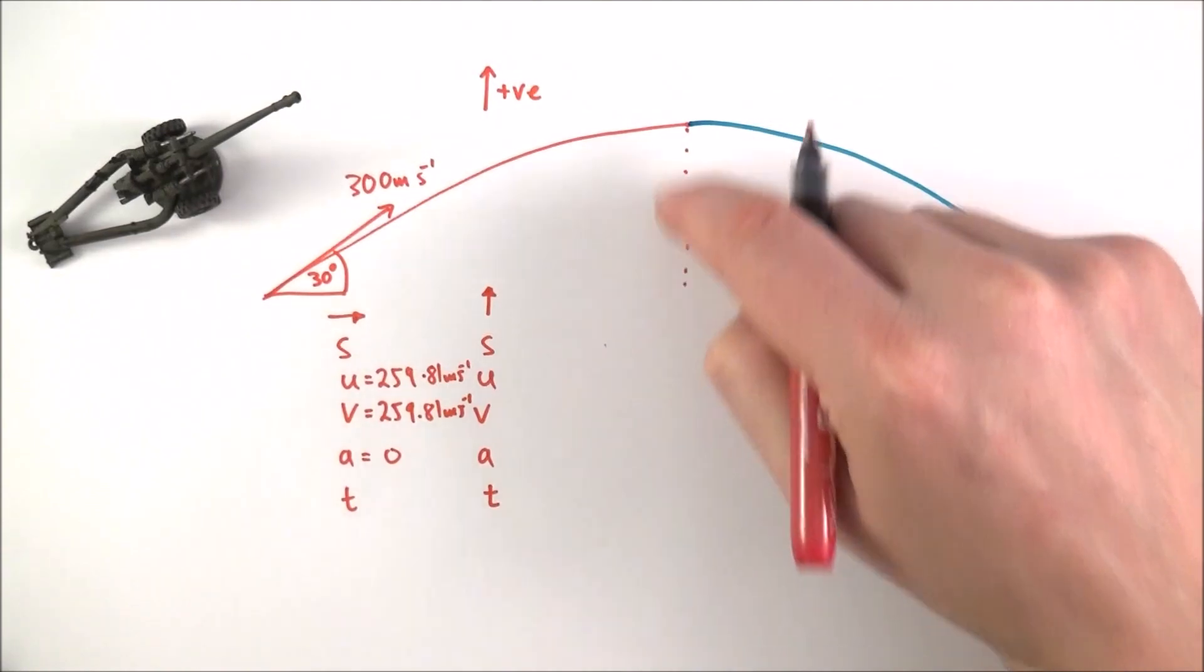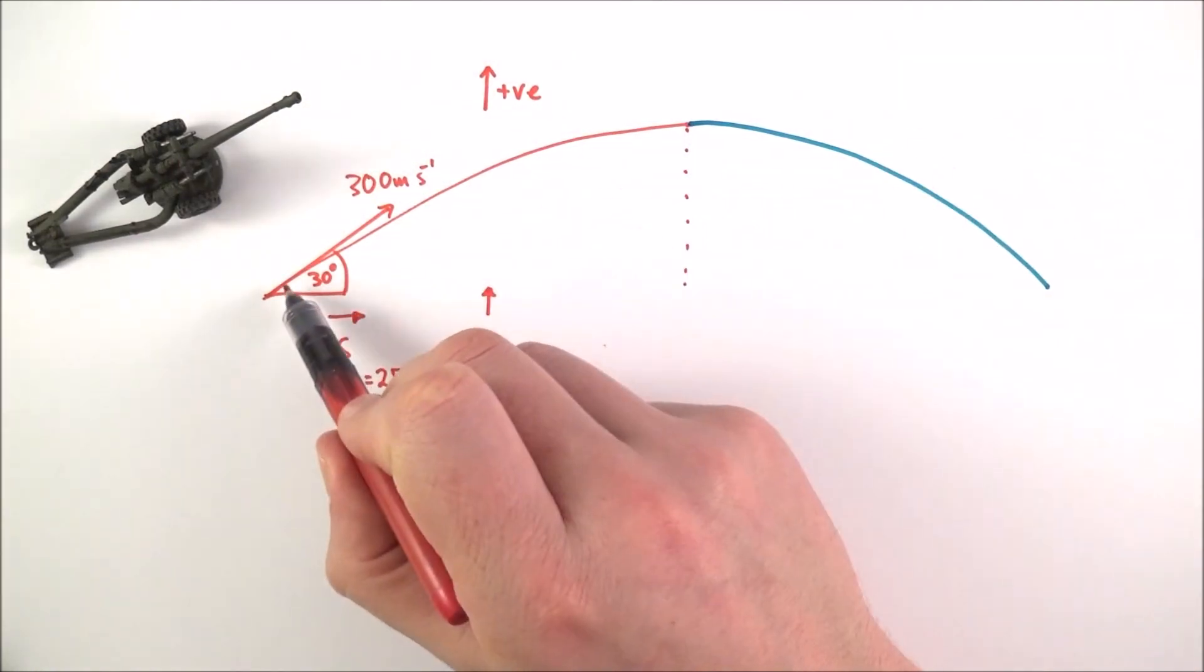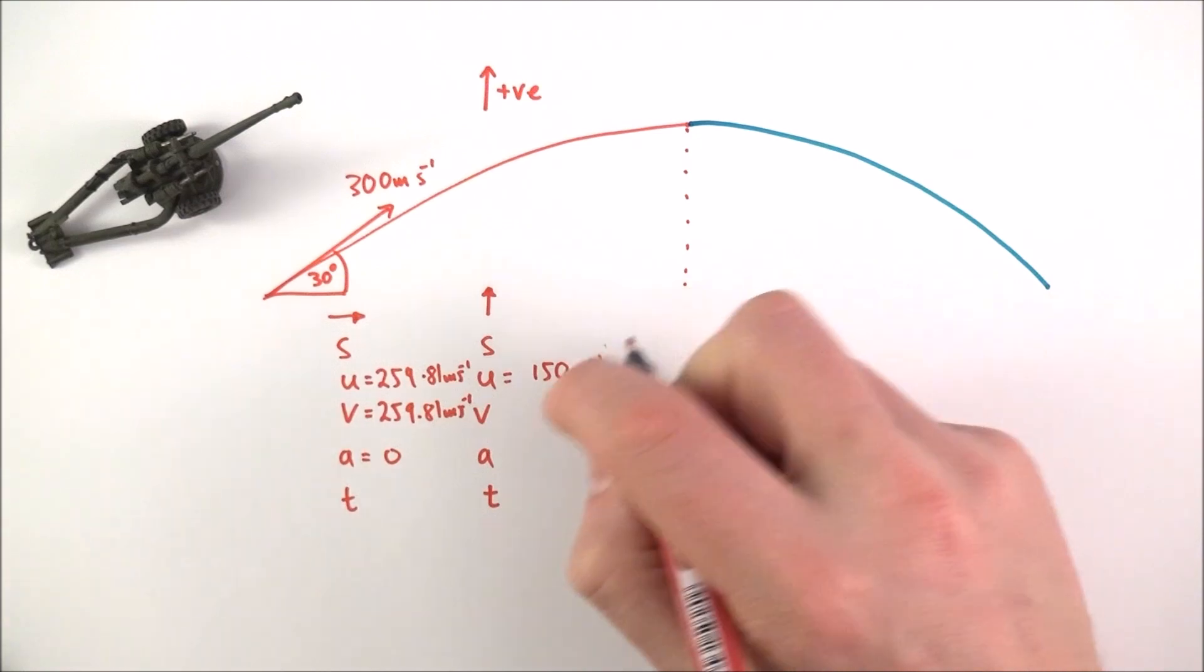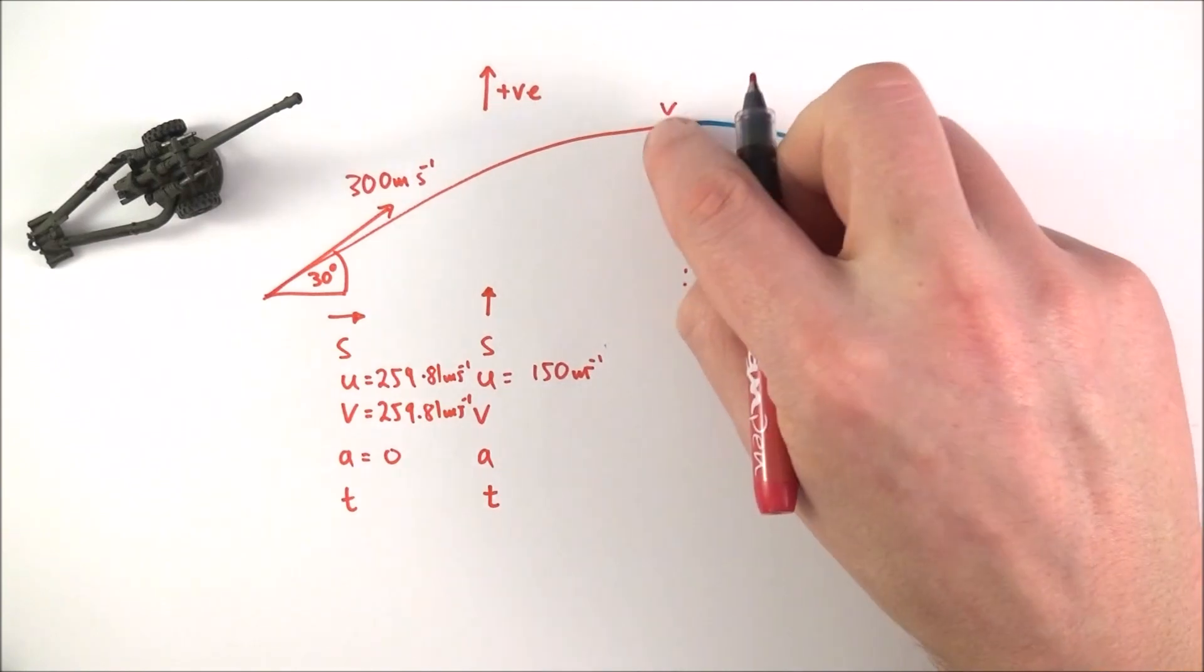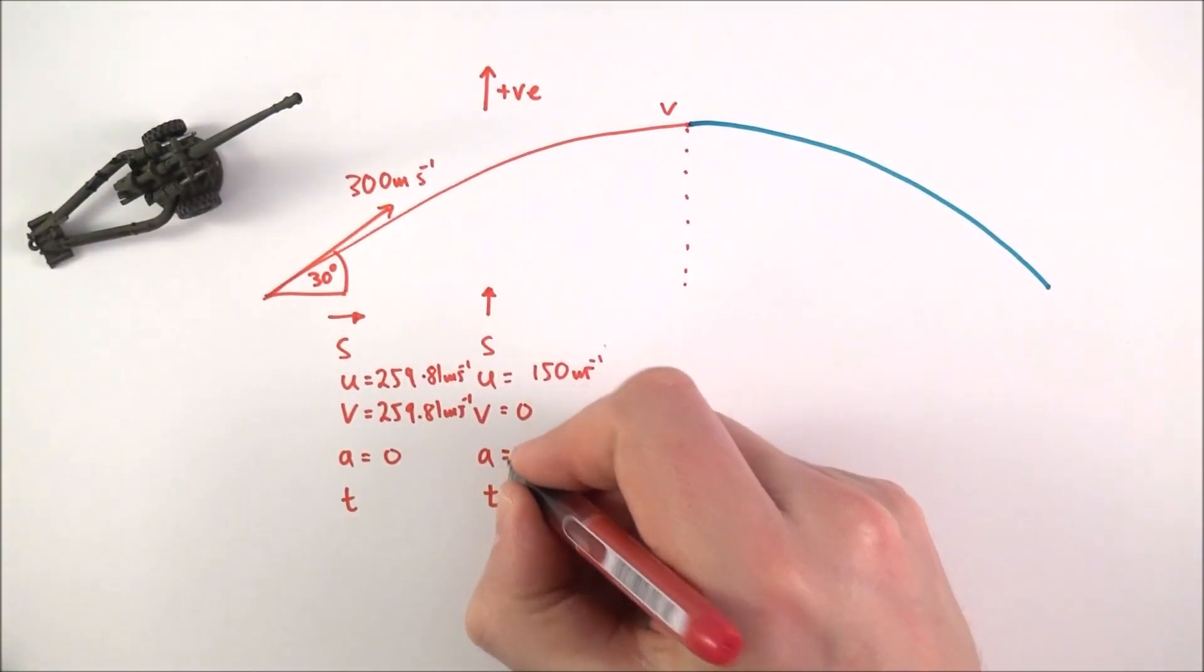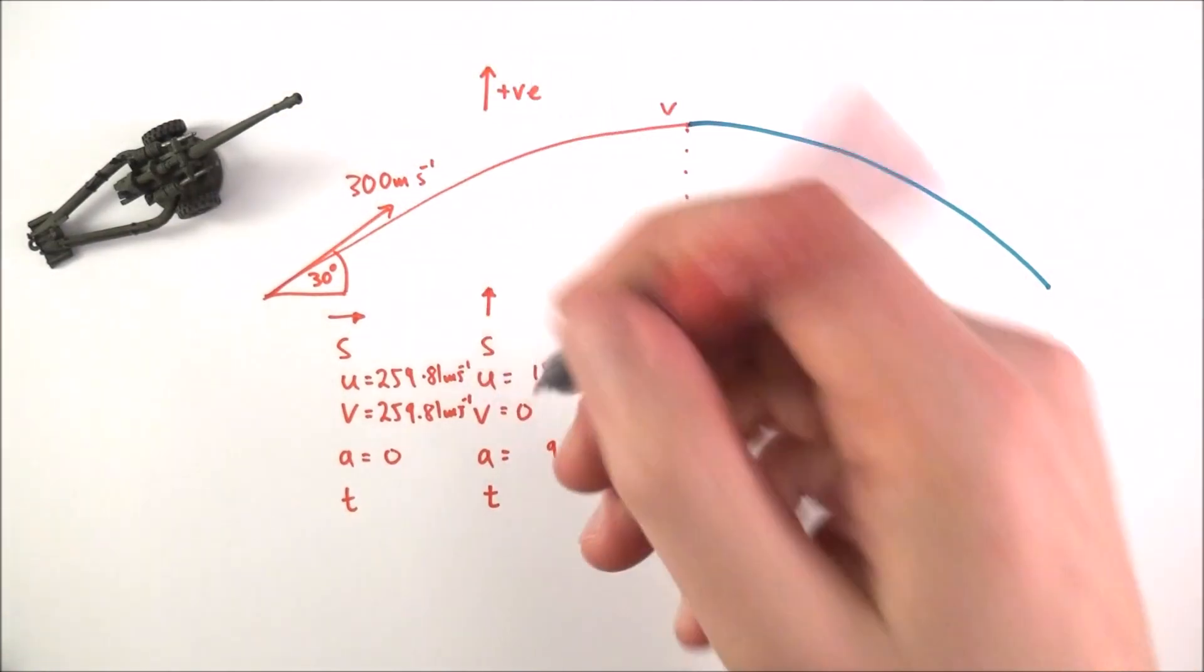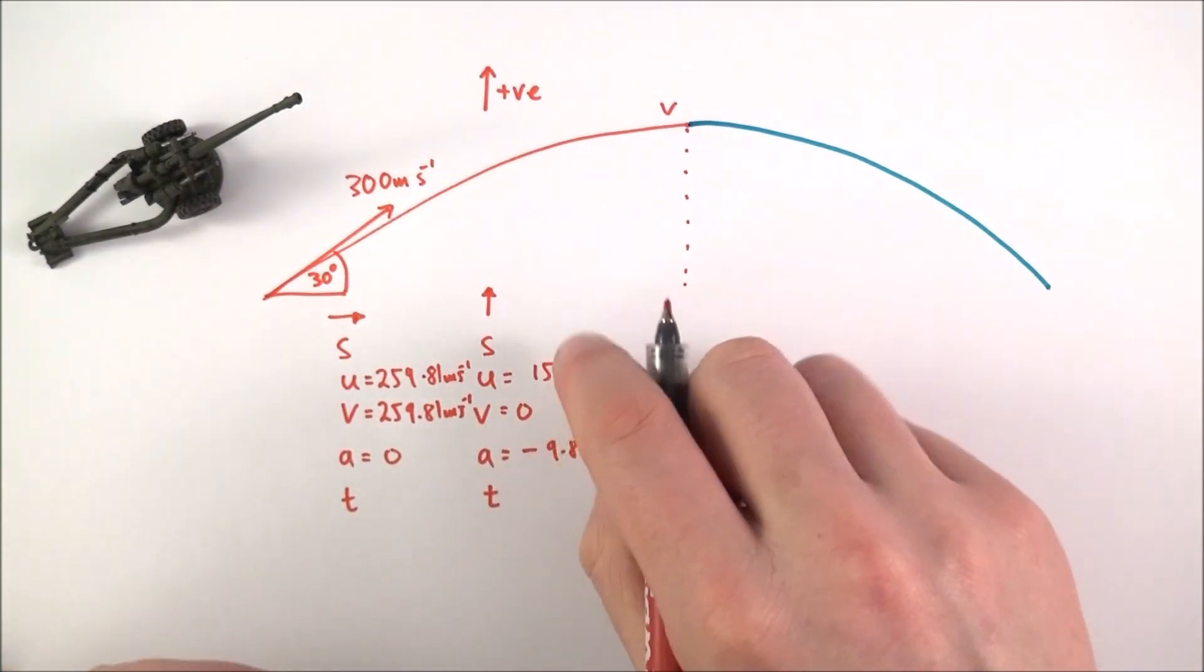In the vertical direction, do we know how high it goes? Not yet. Do we know its initial vertical velocity? We can work it out because if it's going at 300 meters per second at 30 degrees, it's 300 sine 30, which equals 150 meters per second in the upwards direction. The final velocity at the highest point is zero because that's where it stops going higher. The acceleration vertically is 9.81 meters per second squared, but because we're looking at upwards as positive and acceleration is downwards, that's a negative value.